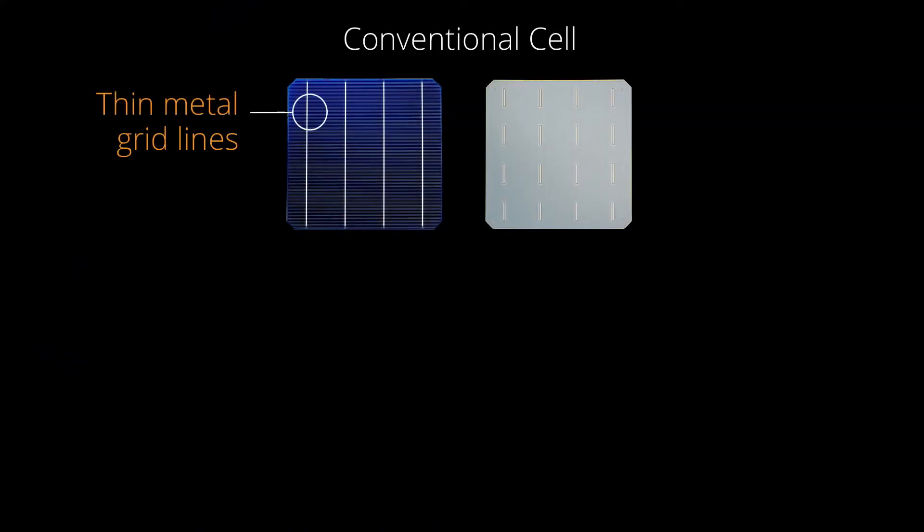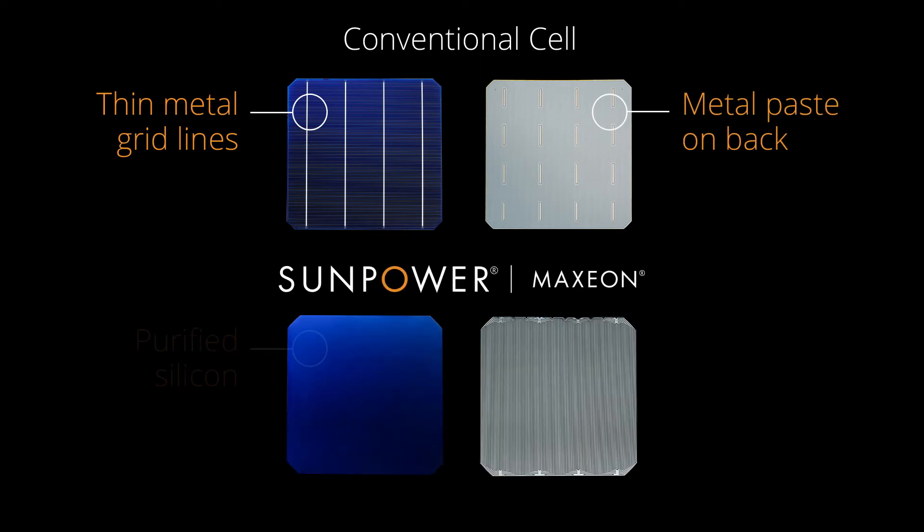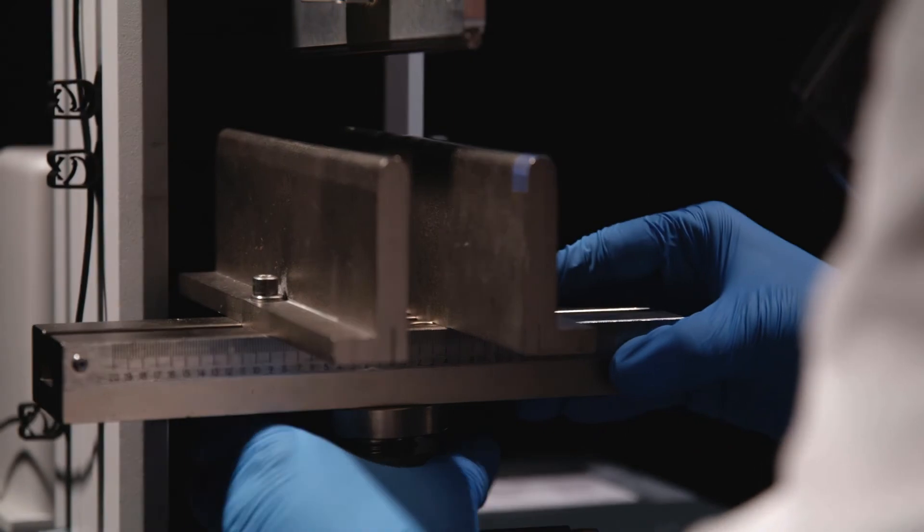Conventional cells rest on a thin layer of metallic paste. Only Maxion cells are built on a solid copper foundation, making them virtually impervious to breakage, as scientific testing in laboratories makes clear.